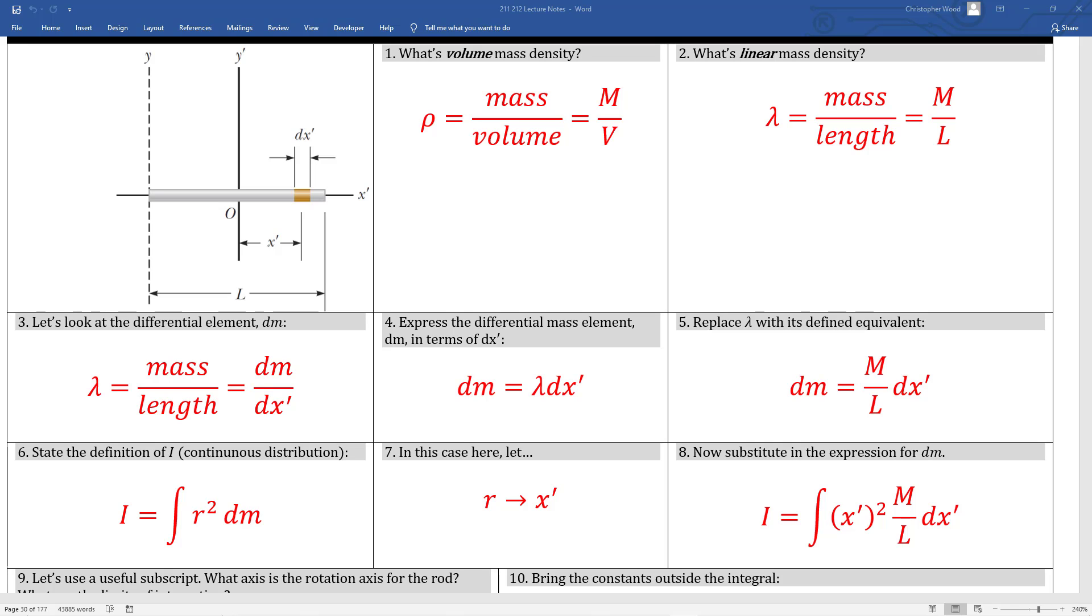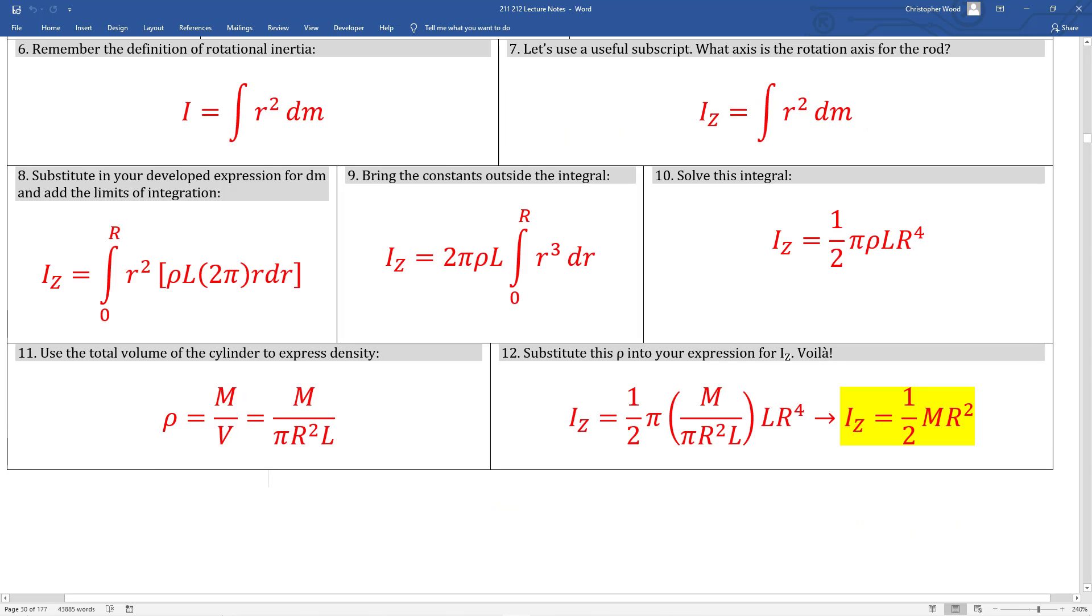We did the same thing for a uniform rigid rod in boxes 1, 2, and 3. This again is capturing the elements, material, and geometric properties. Here's the rest of the derivation. Solid cylinders are really common and really important building blocks. 1 half mr squared is a really well known rotational inertia expression.